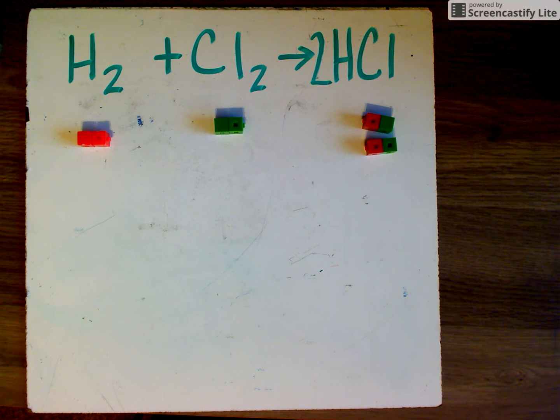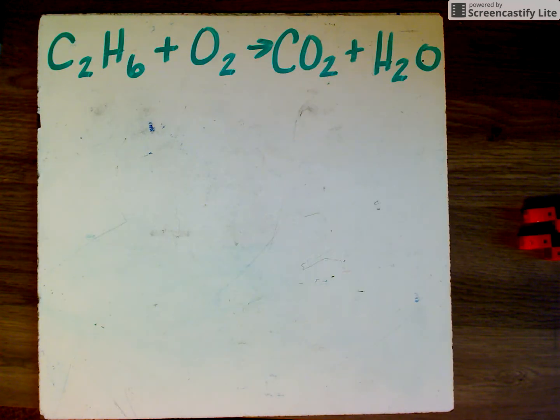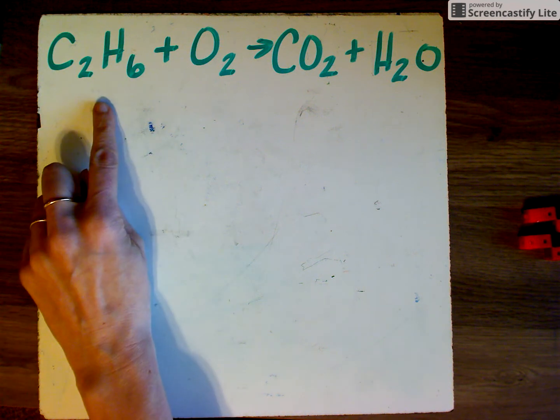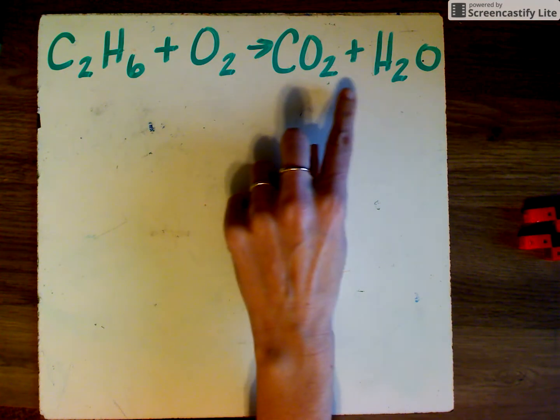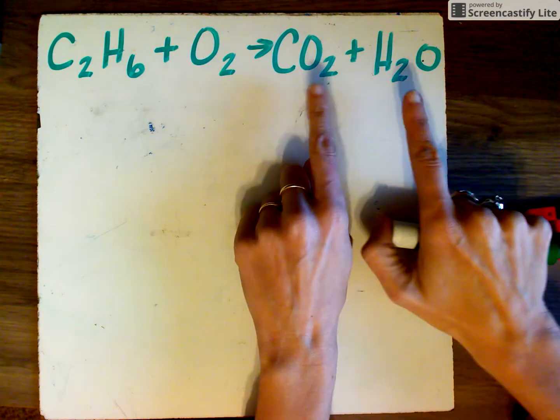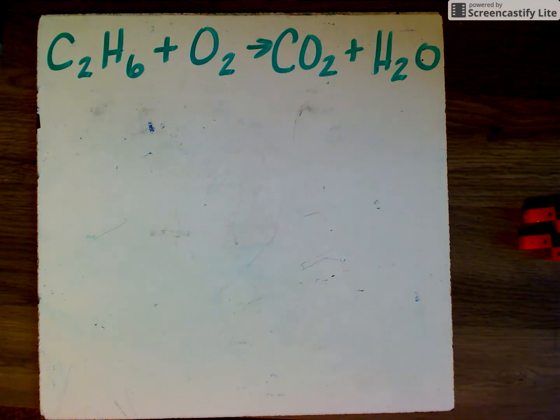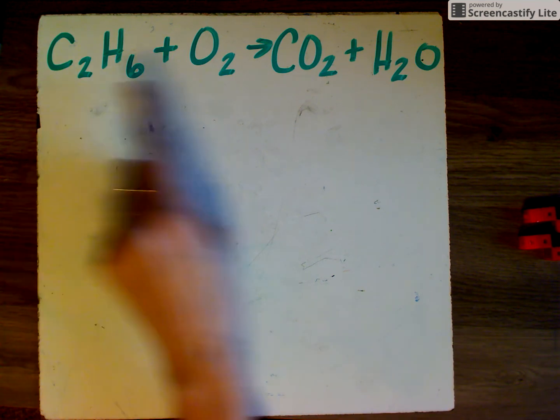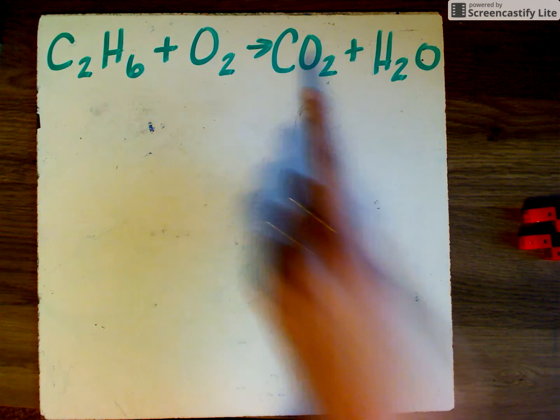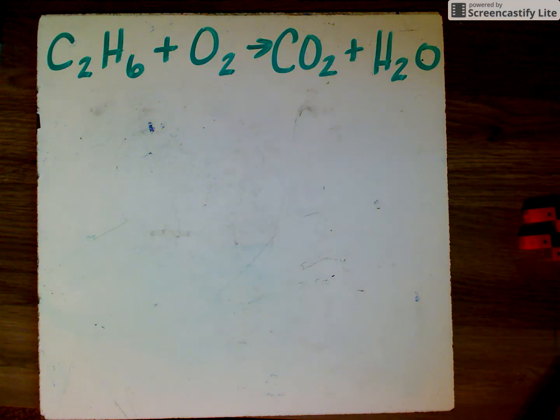Let's try a more difficult one. Here we have the formula for how ethane, C2H6, reacts with oxygen to make carbon dioxide and water. If you'll notice here, there's two products, but that's not going to change our process any. We're still going to have to balance this out. Right now it's not balanced because I have two carbon over here, but I only have one carbon over here. So we're going to have to do some work.